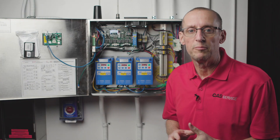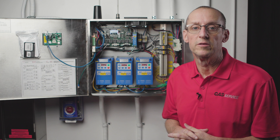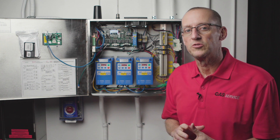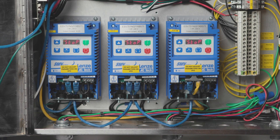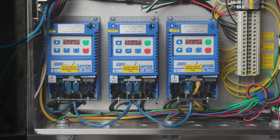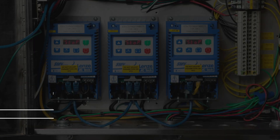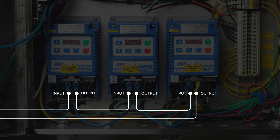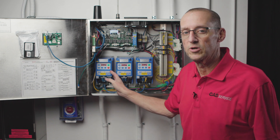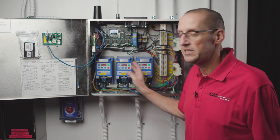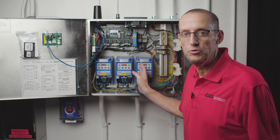First let me explain what a Modbus network is. A Modbus network is an internal device network where you have several devices all connected together, daisy-chained together with CAT5 cable — all this blue cable here. So for example, we have three VFDs, and because they're all daisy-chained together on one network with one single cable, each device has to have its own unique address.